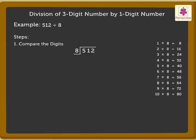So, by using the table of 8, let us find the product which is equal to or less than and nearest to the digits 51 of the dividend. The nearest product is 48, as 6 into 8 is equal to 48. Write 6 in the tens place in the quotient and the number 48 under 51.